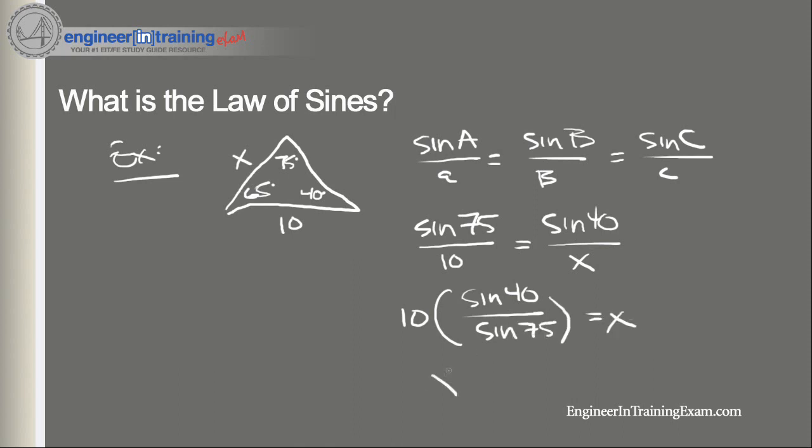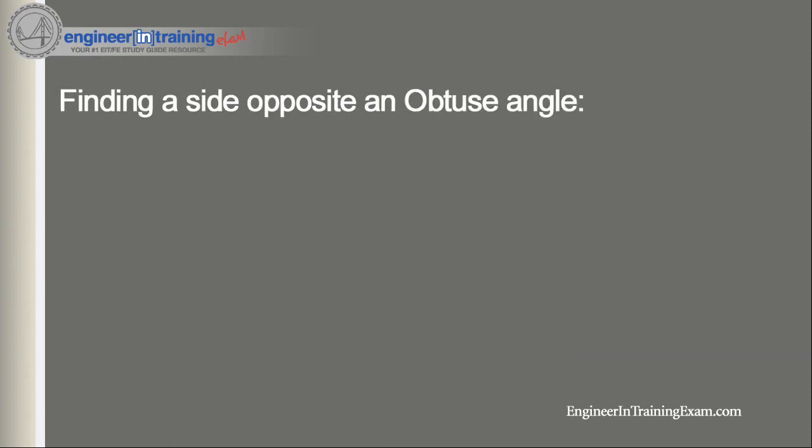So what if we are given a triangle that has an obtuse angle? How do we go about solving that? Well, no differently. We do the same thing. We just take the ratios of the sides and the angles and solve for them. So let's look at an example there.